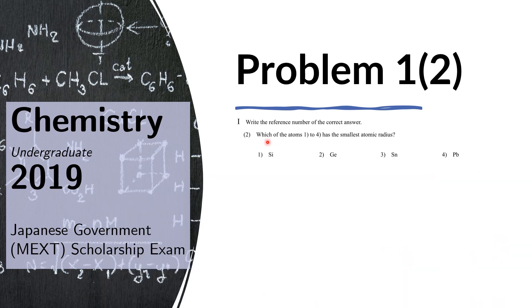Problem 1.2: Which of the atoms 1 to 4 has the smallest atomic radius? For this problem, we need to be able to imagine the location of the elements in the periodic table and see how they are related in terms of their position on it.